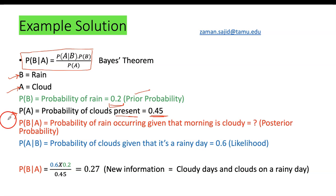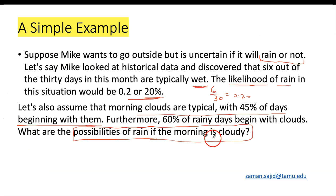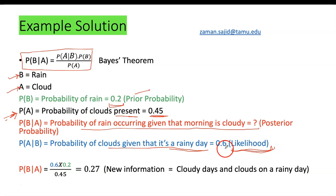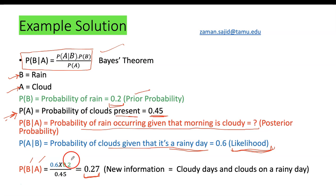We are looking to find our posterior probability, which is the probability of rain occurring given that the morning is cloudy. In terms of P(A|B), it is the probability of clouds given that it is a rainy day — that is our likelihood value, which is 0.6. We plug the values into Bayes' theorem and find that our posterior probability — the probability of B (rain) given A (clouds) — turns out to be 0.27.